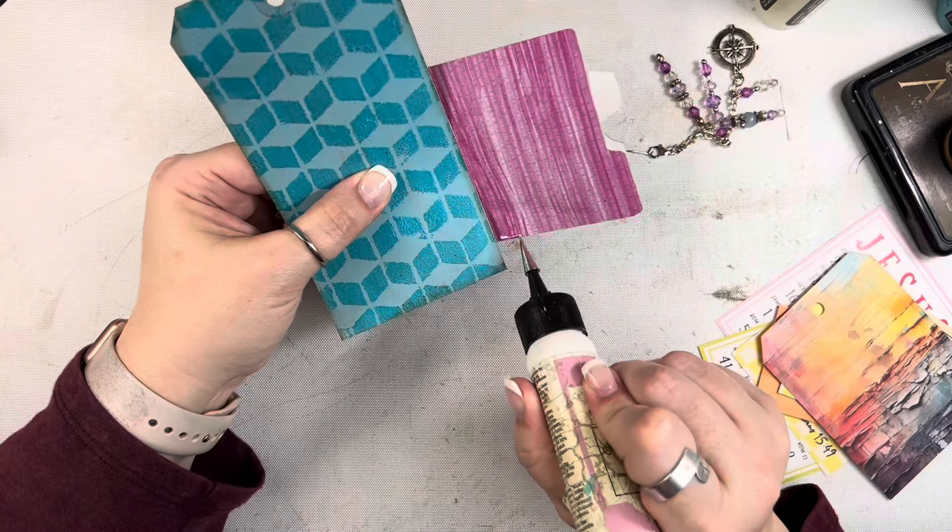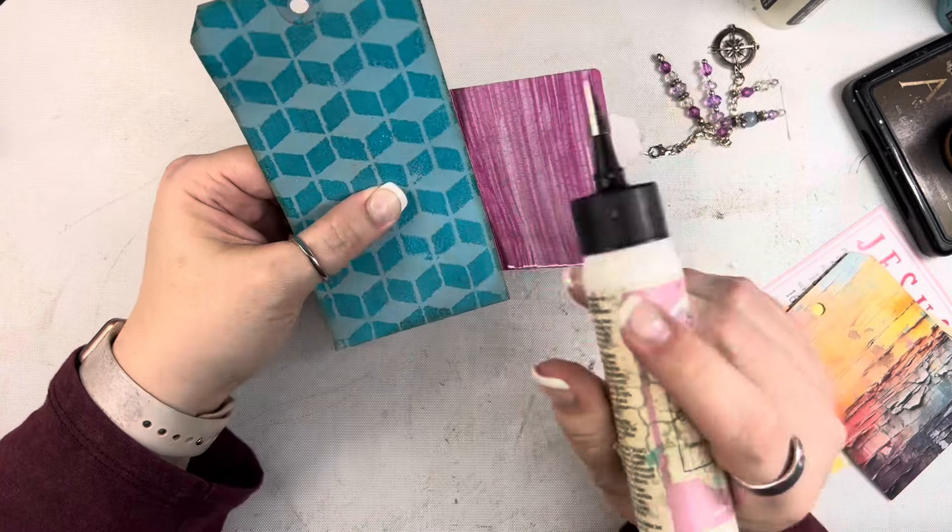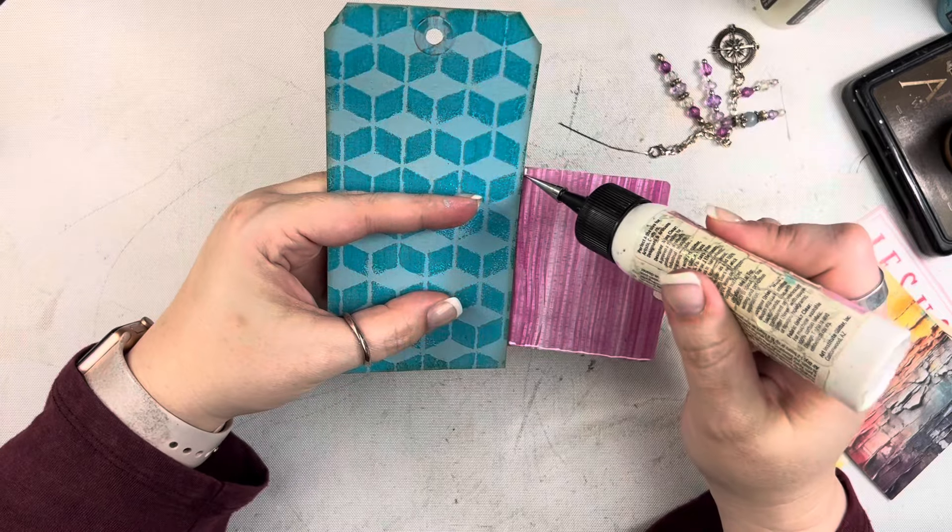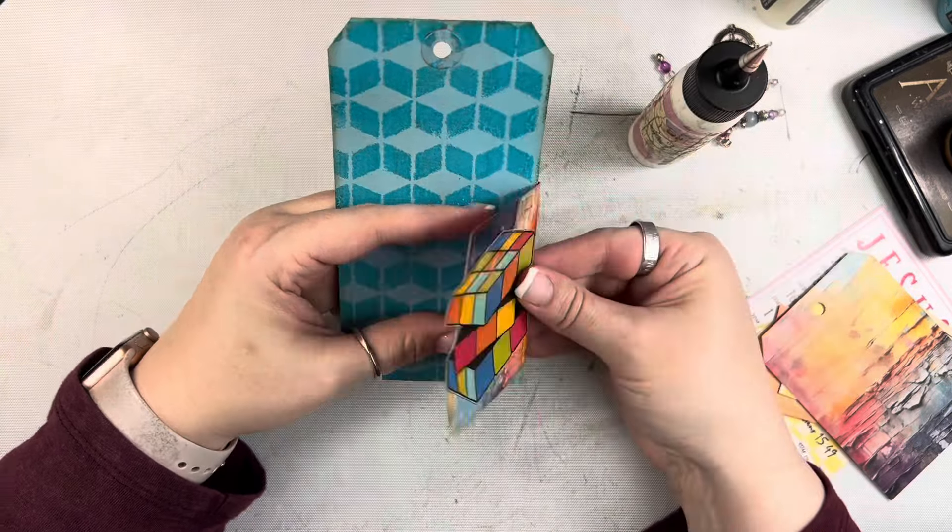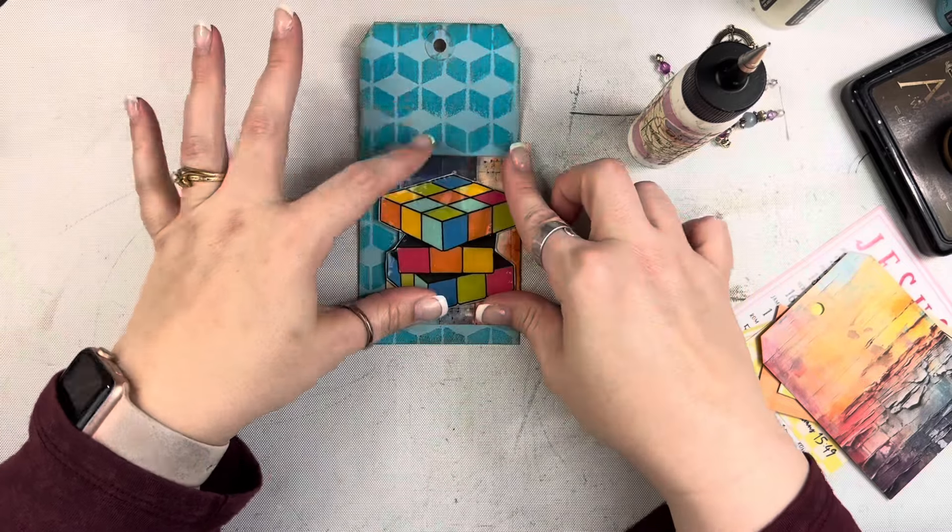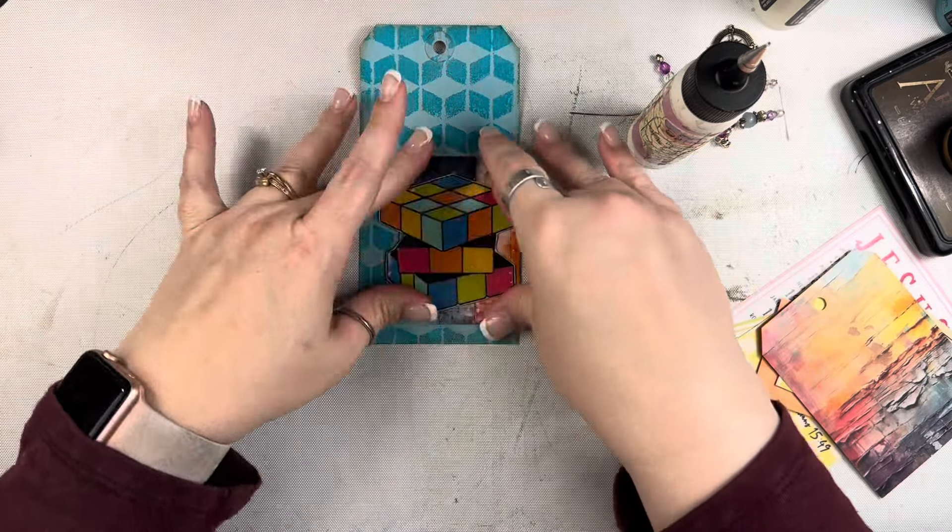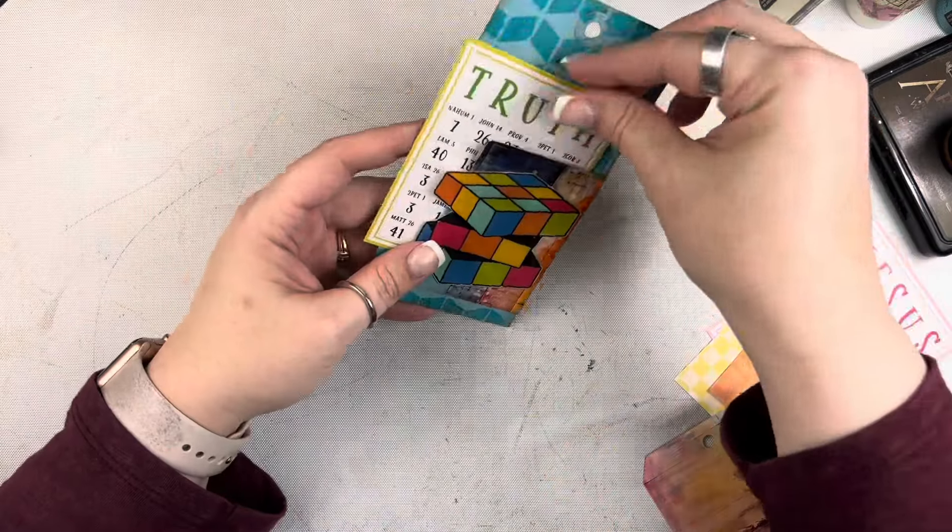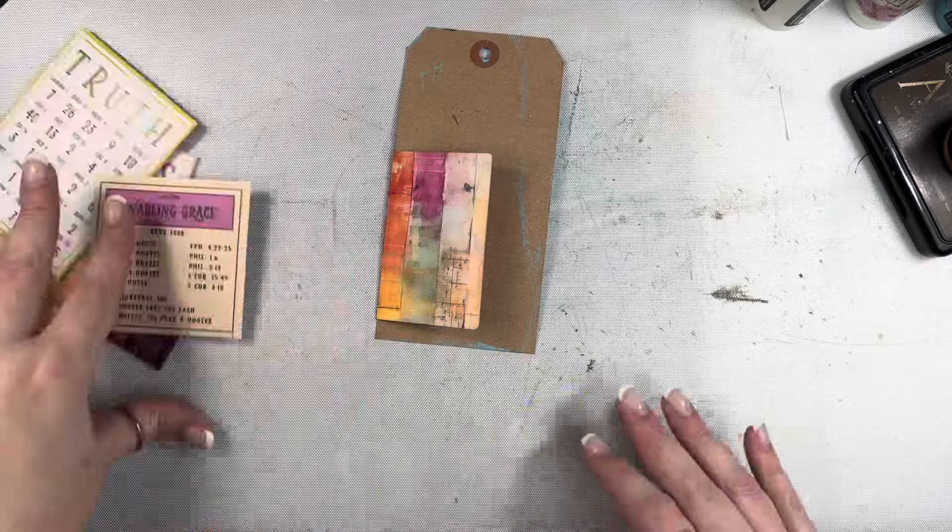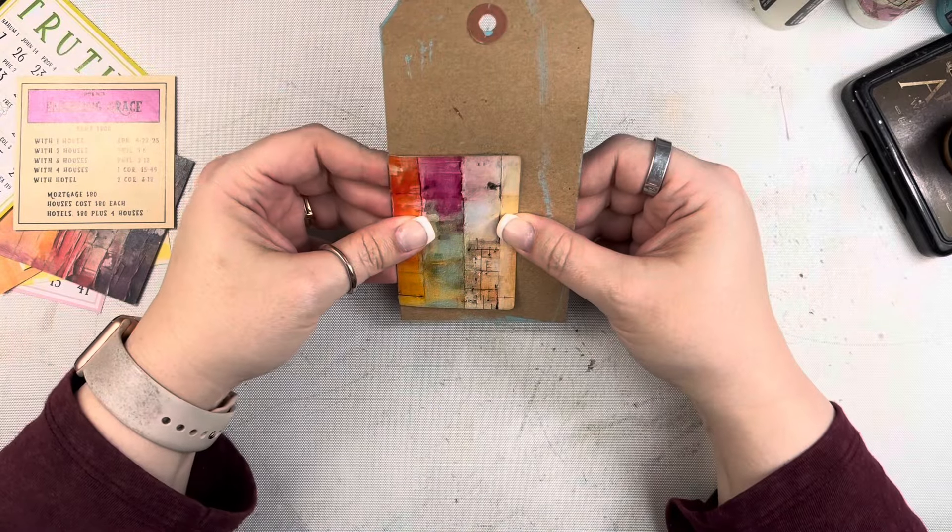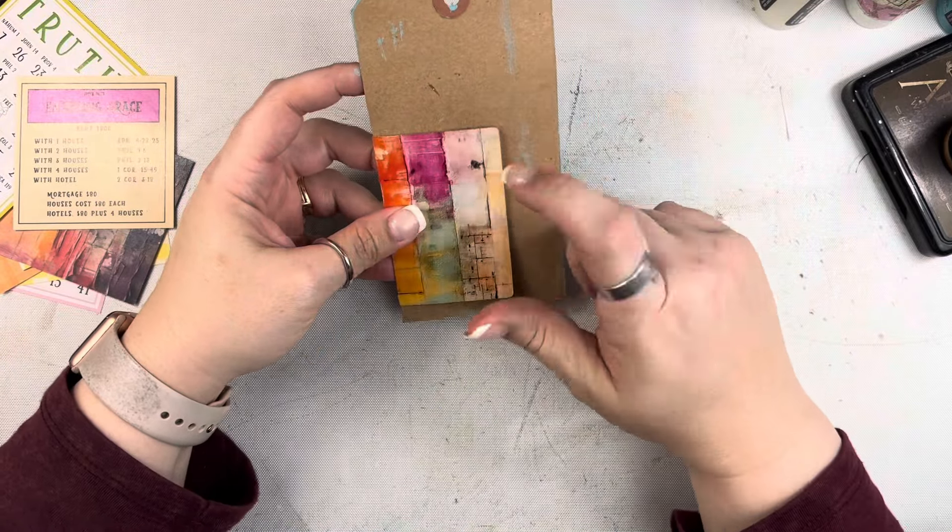All right, so she's cleaning down this little pocket with the Rubik's cube so she can put the little thingamabobbers in it, a little bingo card, it looks like a Monopoly card.